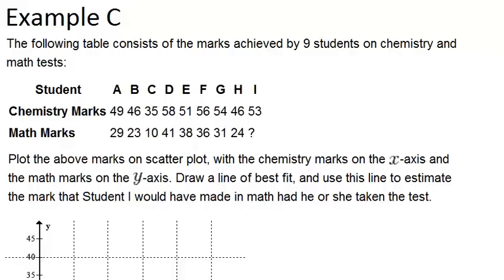Example C. The following table consists of the marks achieved by nine students on chemistry and math tests. So we have a table right here. Plot the above marks on a scatter plot with the chemistry marks on the x-axis and the math marks on the y-axis.